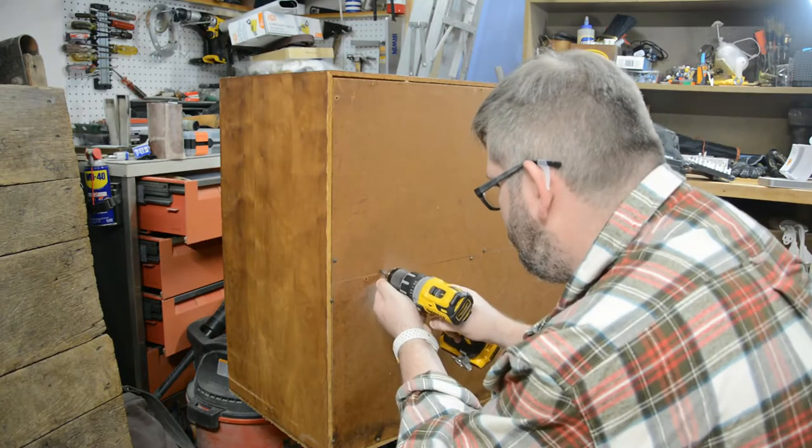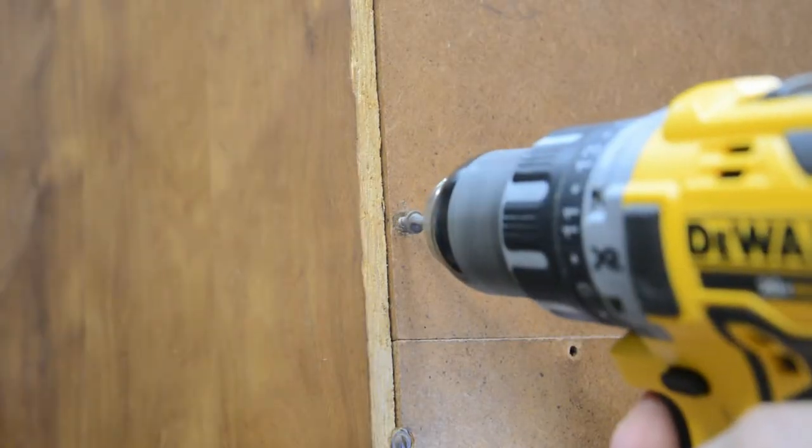But first, we're going to take the back two panels off of the piece, so we can take a look at the insides and see what needs to be done there.